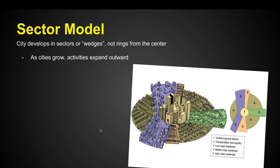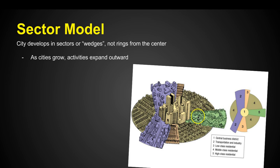The sector model is just a little bit different — the same general ideas, but we're looking at the city as it develops in sectors or wedges, not rings, as we move away from the center. We still have the CBD in the center, but as cities grow, activities expand outward in wedges. The concentric zone model is kind of utopian, where everything is in a circle. The wedge seems to make more sense — for example, transportation and industry move outward from the CBD in one wedge, while a high-class residential area takes up an entire wedge close to the CBD on another side.